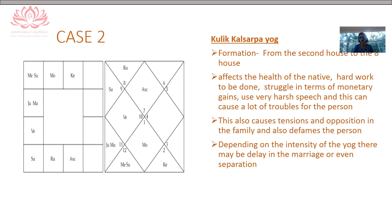Kulik Kalsarp Yoga is the formation of Rahu and Ketu between the second and eighth houses. It affects the health of the native because the eighth house is the house of health. The second house is about your ability to accrue money, your family, and also your morals, reputation, and administrativeness. All these things get affected by the affliction of Kalsarp Yoga due to the placement of Rahu and Ketu between the second and eighth house along with all the planets.